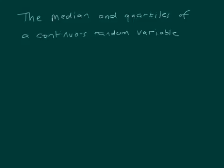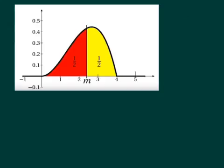This video is about finding the median and quartiles of a continuous random variable. The median is a value m such that the probability that x is less than m is a half, and the probability that x is greater than m is also a half.